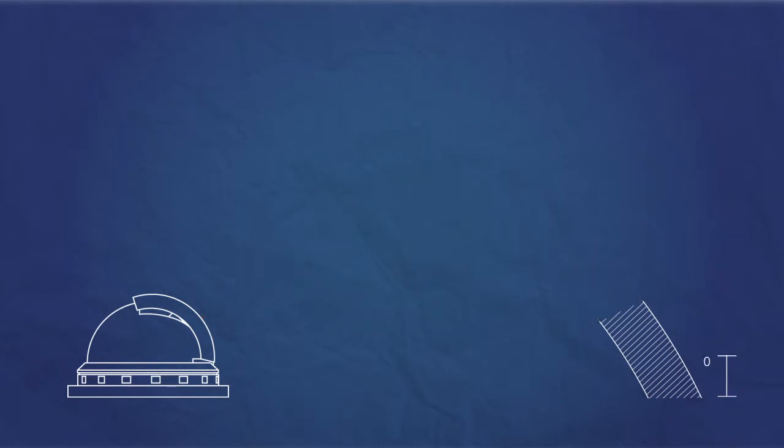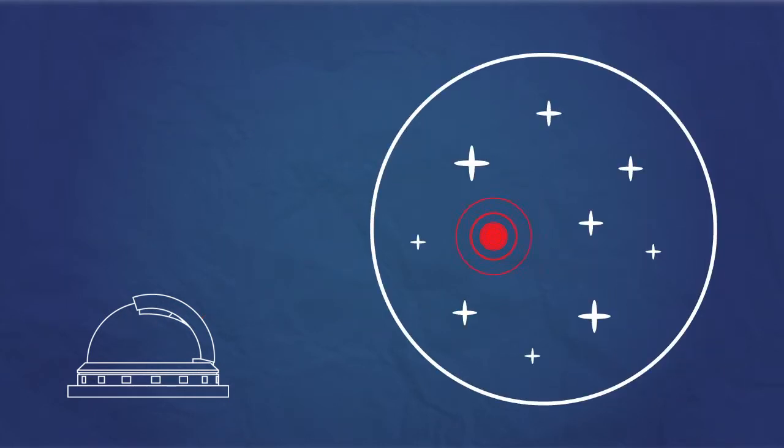That glow acts as a fake star, which can be used as a reference to calculate the distortion.